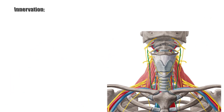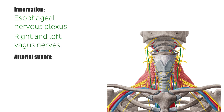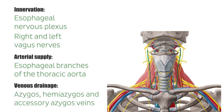The esophagus is innervated by the esophageal nervous plexus, which is comprised of fibers stemming from the right and left vagus nerves, which contain sympathetic fibers. The arterial supply is governed by the esophageal branches of the thoracic aorta, and the venous drainage occurs via the azygous, hemiazygous, and accessory azygous veins.